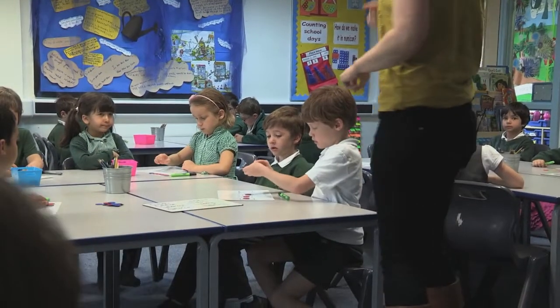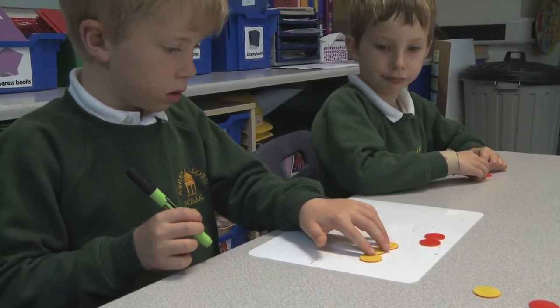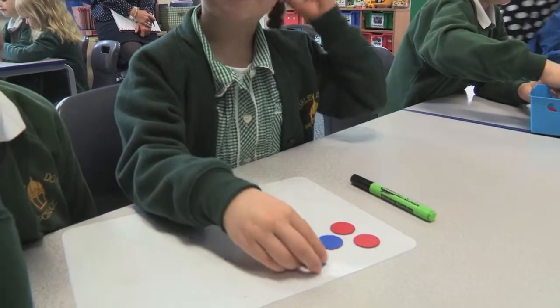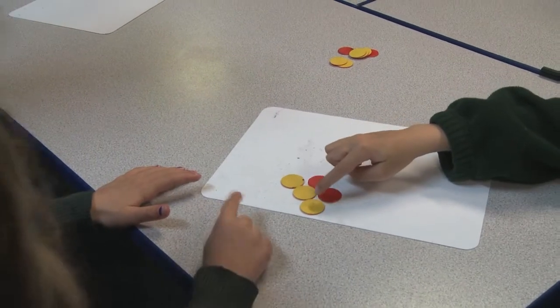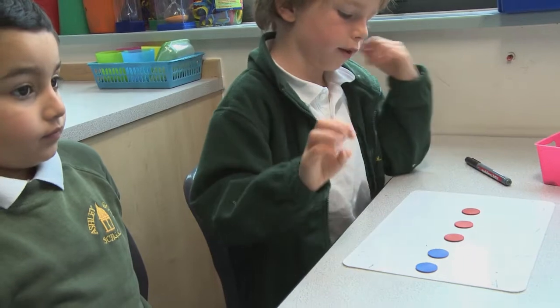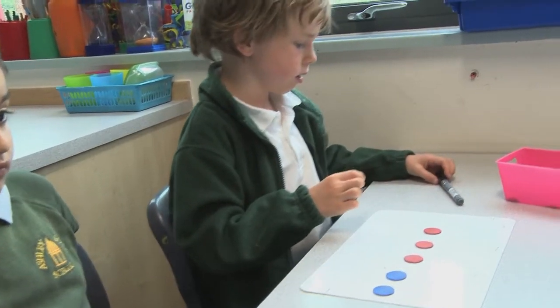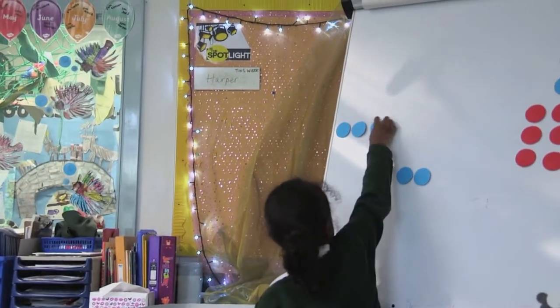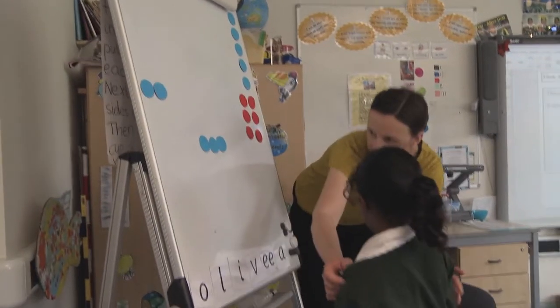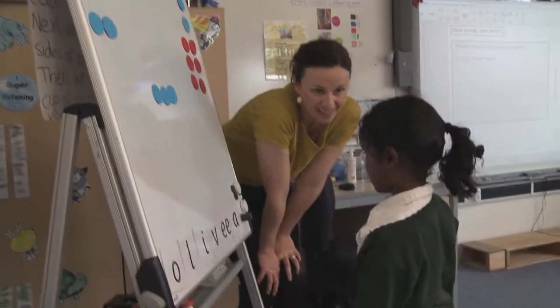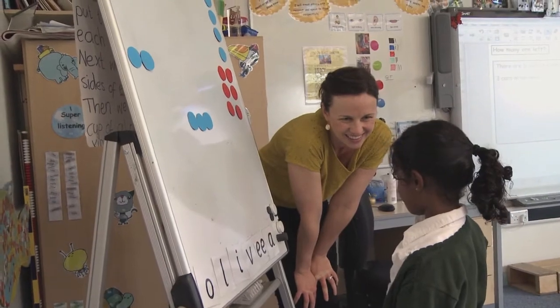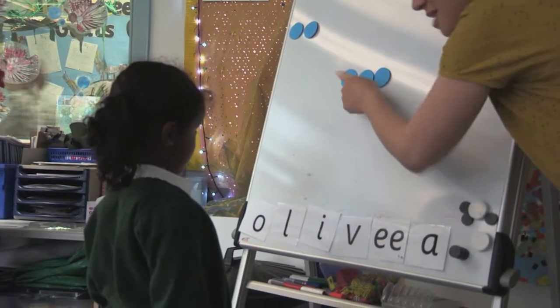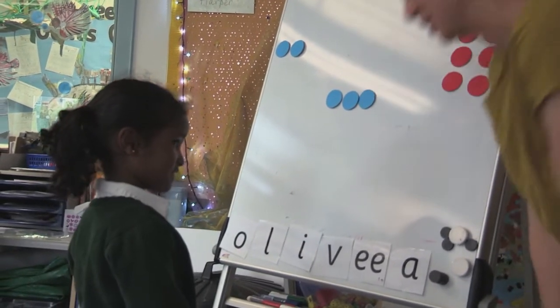Three cars drive away. Can you think about how we could represent that? That's partner two's job. Three cars drive away — can you represent that for me? Which ones are the three cars that have driven away? I turned over to represent the green way. I would like someone to come and show me how they have represented the cars driving away.